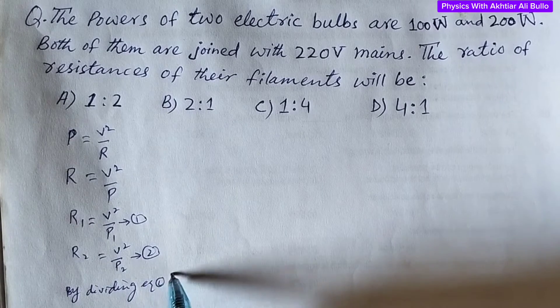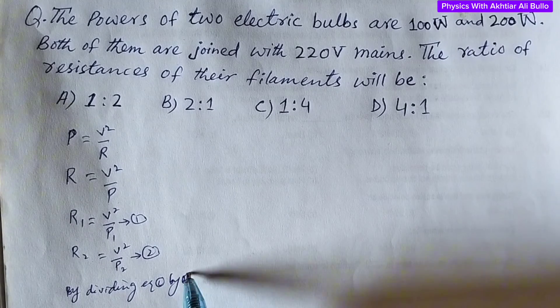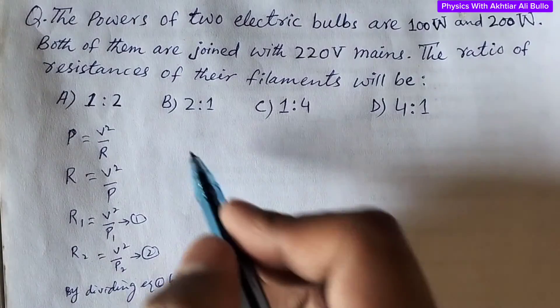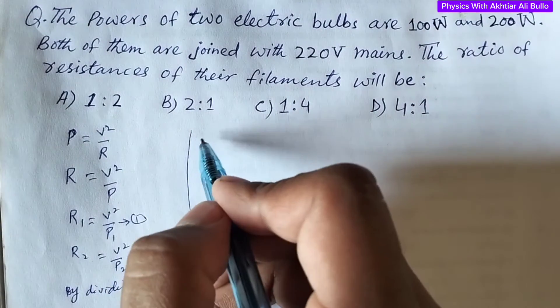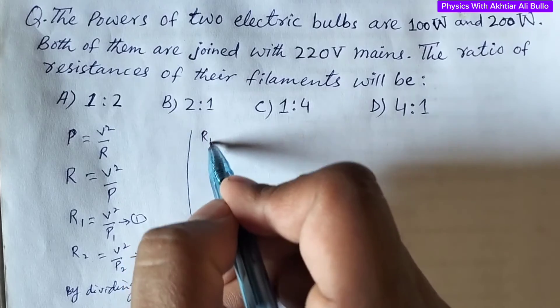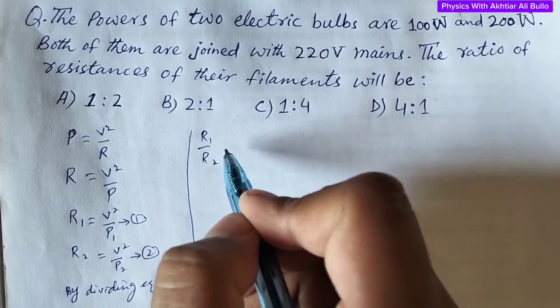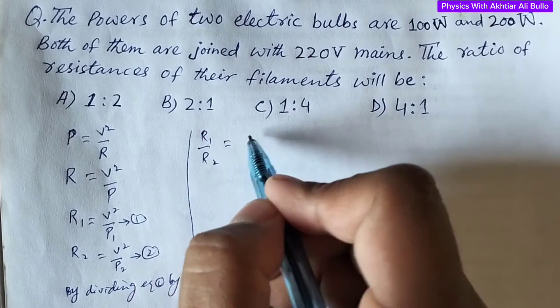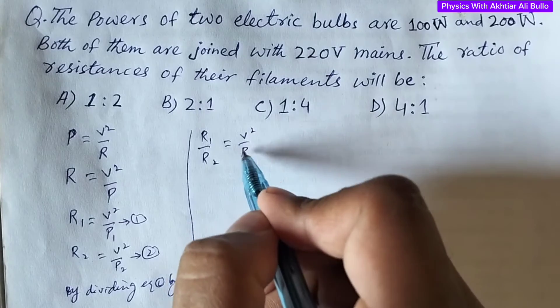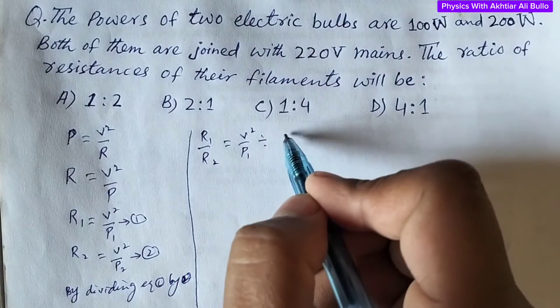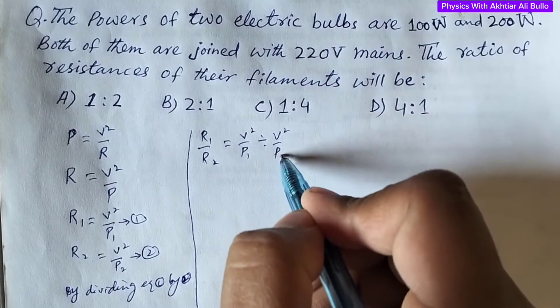Now by dividing equation 1 by 2, R₁ upon R₂ is equal to V squared upon P₁ divided by V squared upon P₂.